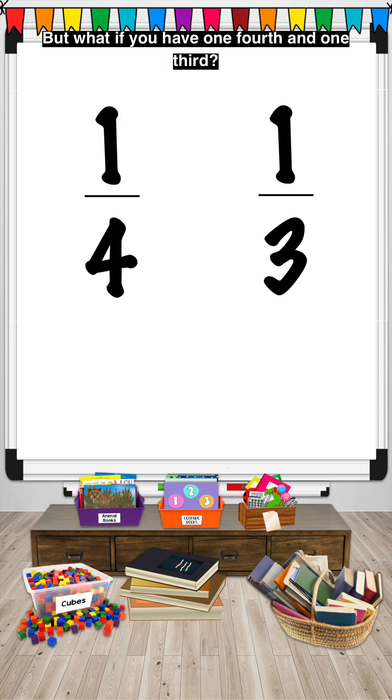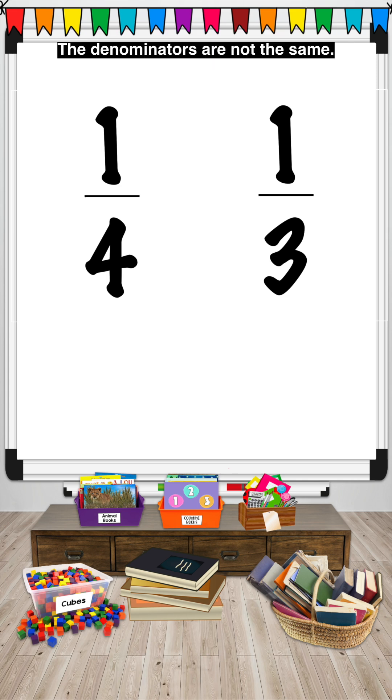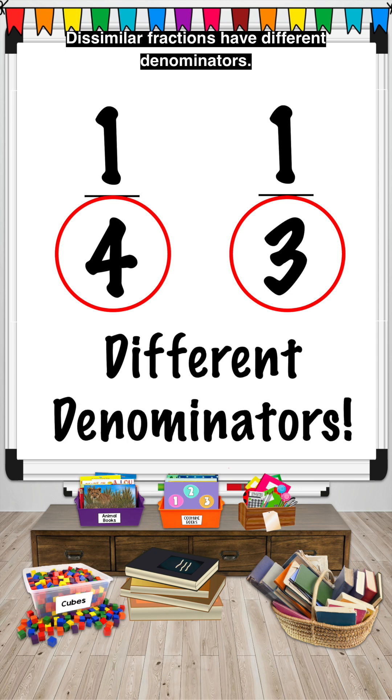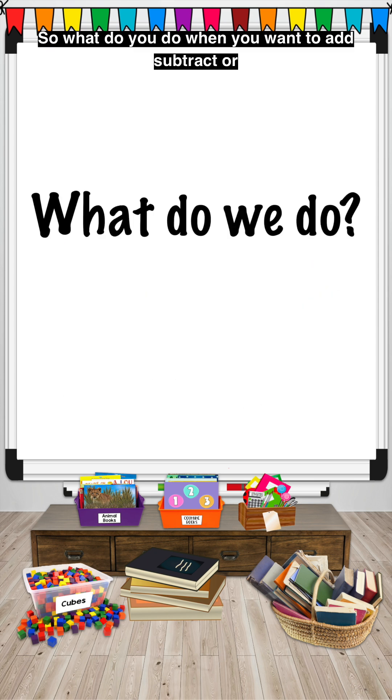But what if you have one-fourth and one-third? The denominators are not the same. Dissimilar fractions have different denominators. So what do you do when you want to add, subtract, or compare fractions with different denominators?